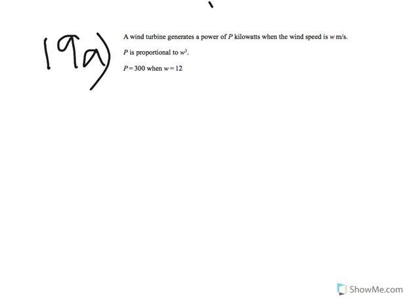For question 19, you're being told that P is proportional to W cubed. 19A is asking you to find a formula for P in terms of W. When something is proportional to something else — in this case P to W cubed — it means that P is equal to a constant K times W cubed. That constant could be any number.